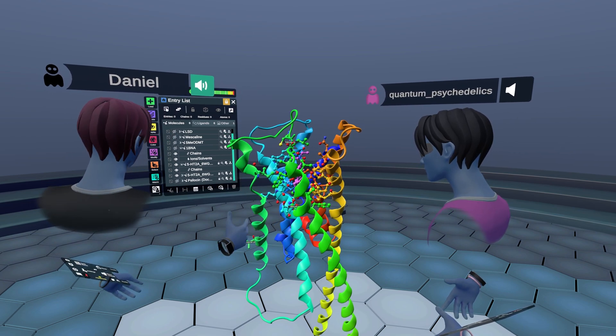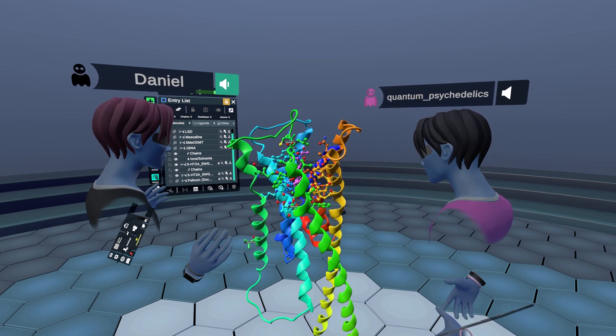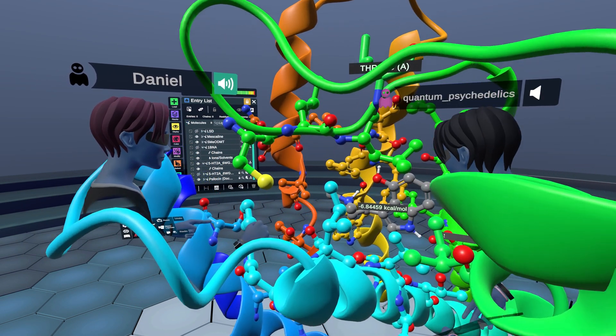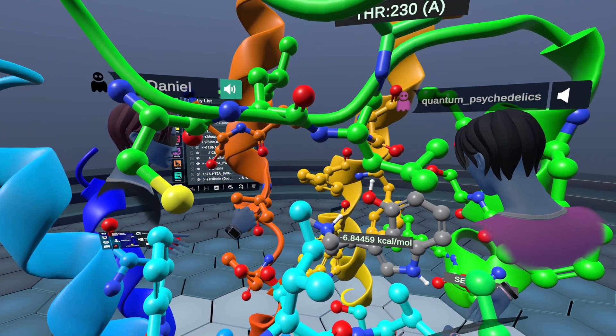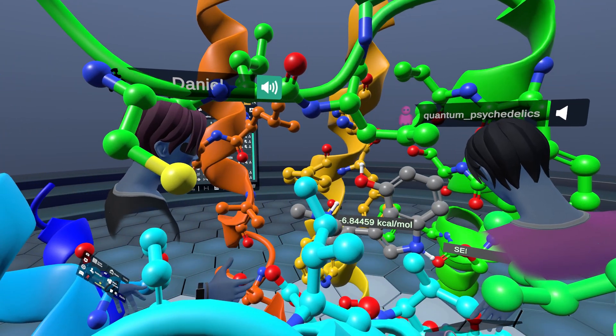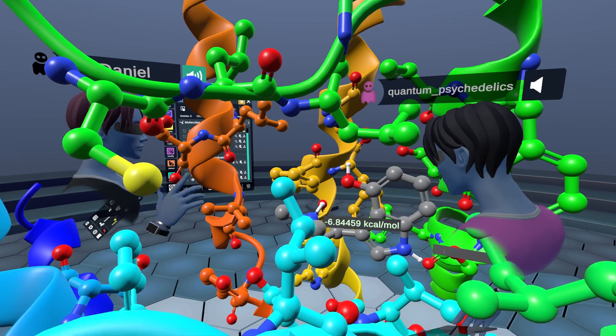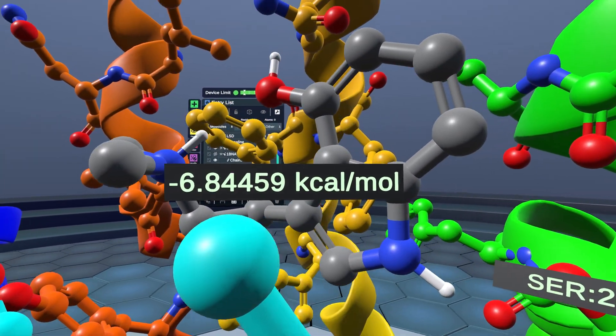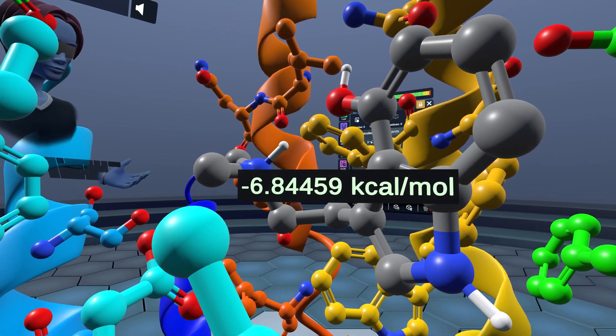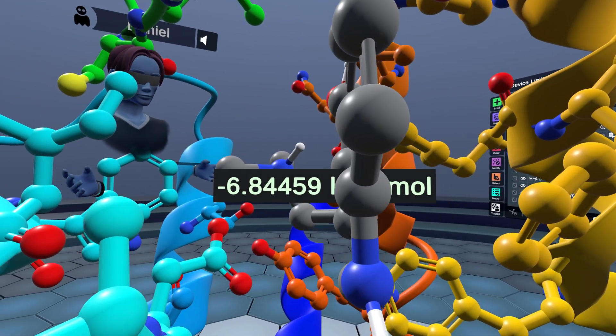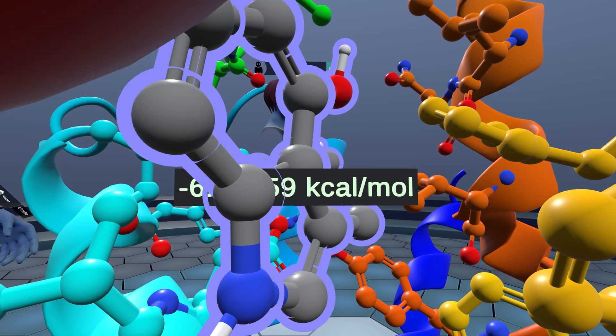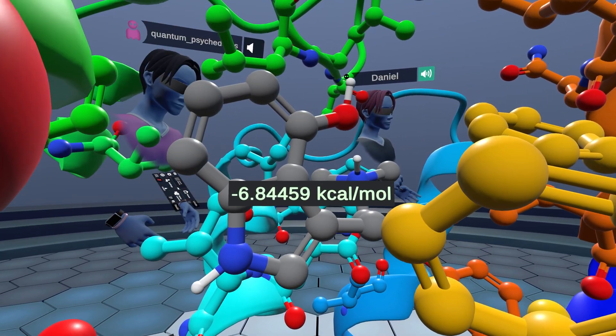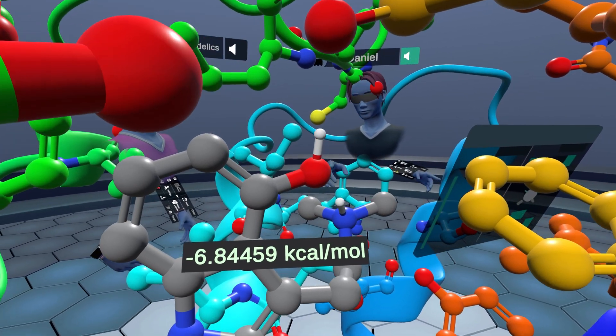So, by the way, another thing we did is we docked psilocin here in this binding pocket. And so, yeah, in gray now we have psilocin, the active drug from Magic Mushrooms. And this is docked here. We docked it in Nanom with the plugin system. We have AutoDock Vina available. And, yeah, I'm going to cycle through different results. We have five docking poses actually. Let's see. This is number one.